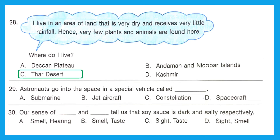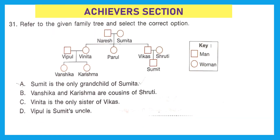Question 29: Astronauts go into space in a special vehicle called — it is a spacecraft. Option D. Question 30: Our sense of dash and dash tell us that soya sauce is dark and salty respectively. To sense that soya sauce is dark, we use sight — we can see the color. To know it is salty, we use our taste sense. The right option is option C — sight and taste.